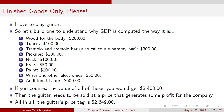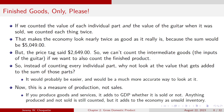If you counted the value of all these things, you'd get about $2,400. Then the guitar needs to be sold at a price that generates some profit for the company, so the guitar's price tag is going to be $2,649. Now if we counted the value of each individual part and the value of the guitar when it was sold, we would have counted everything twice, which makes the economy look almost twice as good as it really is — the sum would be over $5,000. But the price tag was $2,649, so we can't count the intermediate goods if we also want to count the finished product.